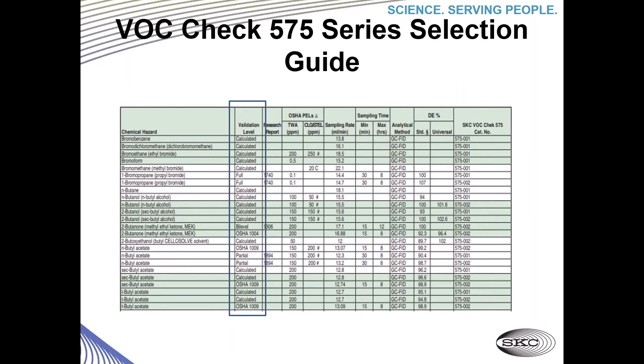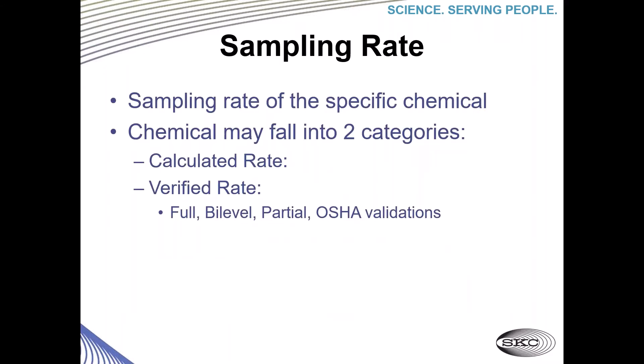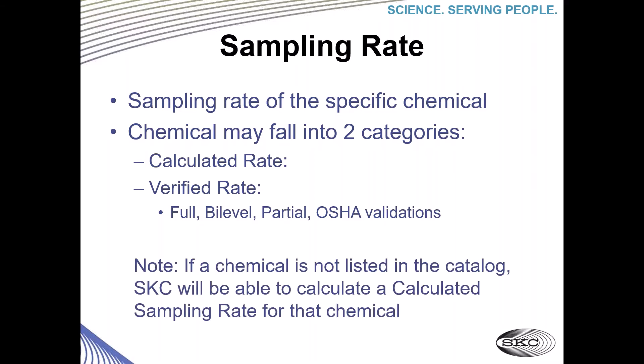The second part I'd like to discuss is the sampling rate — the specific rate of the sample for the chemical. A chemical may fall into two categories: a calculated rate or a verified rate, as covered on the previous slide. If a chemical is not listed in the catalog, SKC will be able to calculate a sampling rate for that chemical.